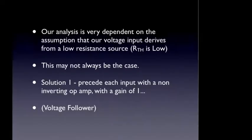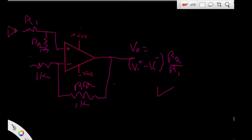The only challenge I have with this design is that our analysis and the rules holding true for this design are very dependent upon our source impedances, our RS values or our ZS values, being very low. And this may not always be the case. One solution that I could look at would be to do the following. These are drawn very small because I'm running out of space here. But I could follow, or proceed, each input with a non-inverting amplifier with a gain of 1. And we refer to this as a voltage follower.